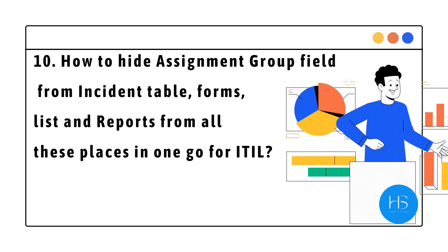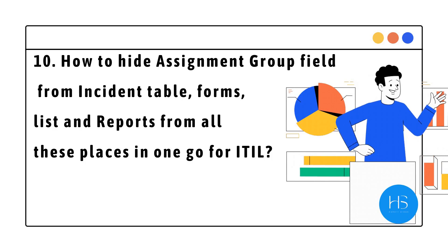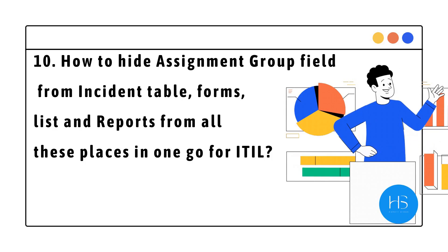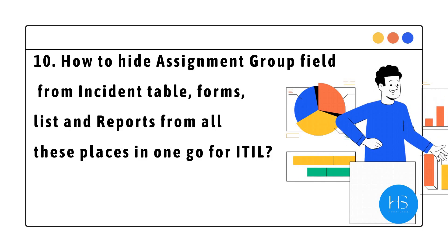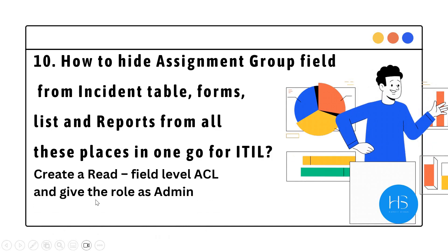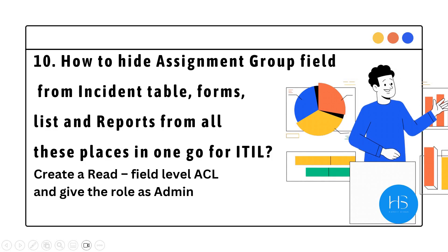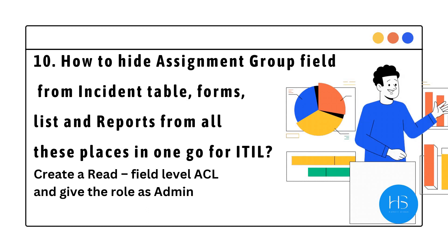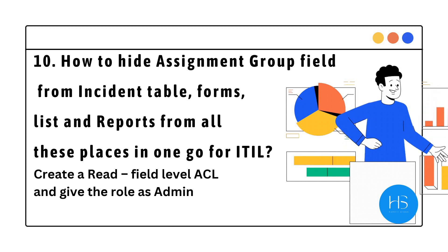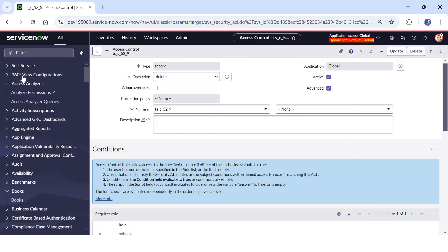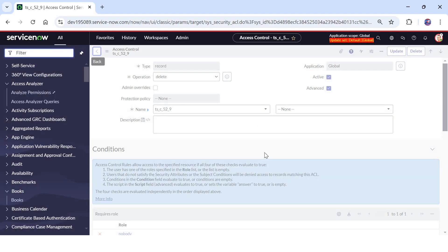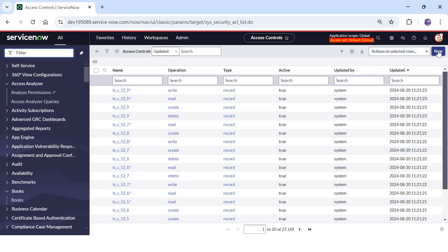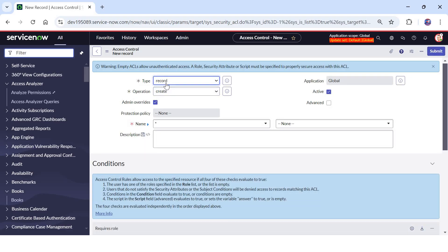The tenth question: how to hide the assignment group field from the Incident table forms, lists, and reports — all in one go — for ITIL users? The answer is really simple. You will create a read field level ACL and give the role as admin, so that only admins can see the assignment group field. Let's go to ServiceNow and test this. I will create a new ACL — it would be a read ACL and a field level ACL on assignment group. I'll keep the type as record, the operation as read, keep admin overrides, and choose the table as Incident.